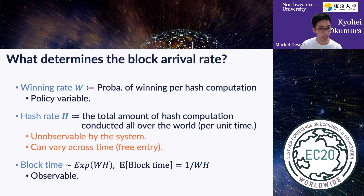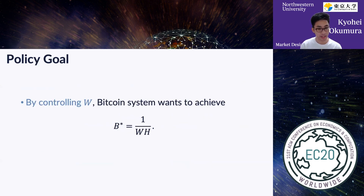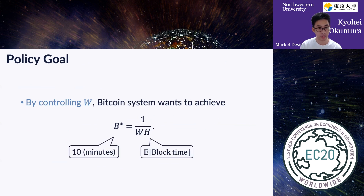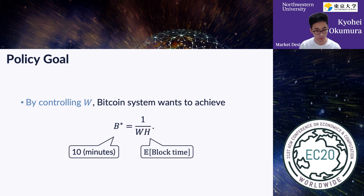The block time is observable. So here is our policy goal: by controlling the winning rate W, the Bitcoin system wants to achieve the equation that the expected block time equals the 10-minute target. Our problem boils down to how we can achieve this policy goal equation.